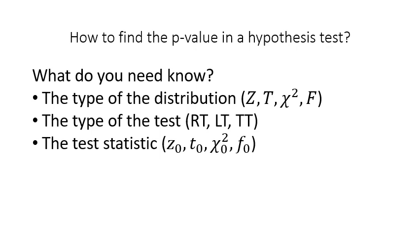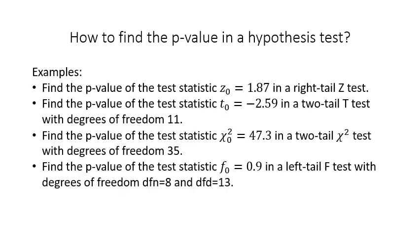That is, the test statistics are normally labeled as z sub 0, t sub 0, chi-square sub 0, or f sub 0. After watching this video, you will be able to answer the following questions. Notice how the type of the procedure, the distribution, and the test statistic can be easily identified in every one of them.